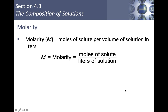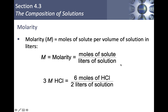Molarity = moles of solute / liters of solution. Notice it's liters of solution, not liters of solvent — it's the entire mixed solution. Normally we assume density is 1, so it doesn't matter much, but you want to make sure you use liters of solution. For example, 3 molar hydrochloric acid (read as '3 molar,' not '3 molarity') could be made from 6 moles of HCl in 2 liters of solution. There are many combinations that give you 3 — 12 over 4, or others.